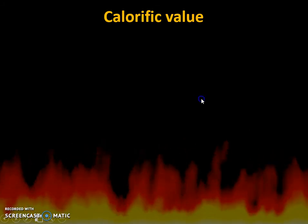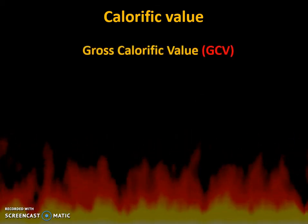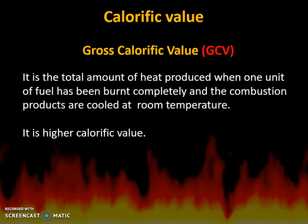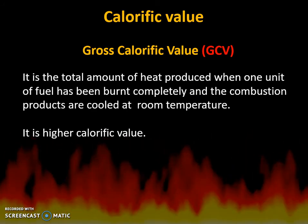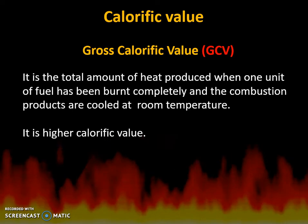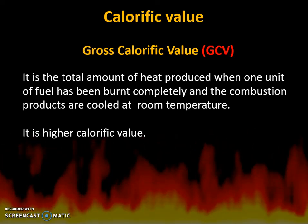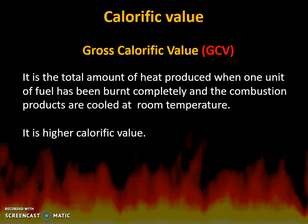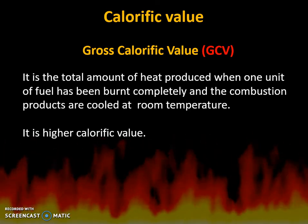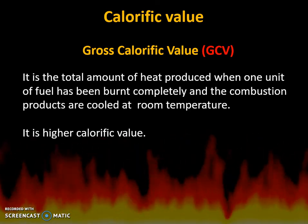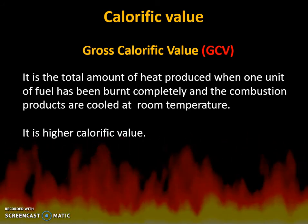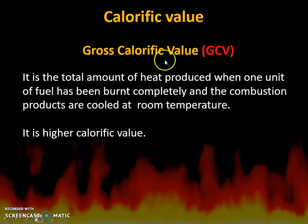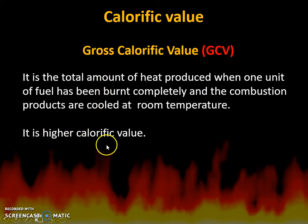Calorific value is of two types. The first is gross calorific value, also called GCV. GCV is the total amount of heat produced when a unit quantity of fuel is burnt, and the products of combustion — carbon dioxide, sulfur dioxide, and moisture — are cooled to room temperature and collected. Whatever the highest amount of energy you get is the gross calorific value; it is also called higher calorific value.